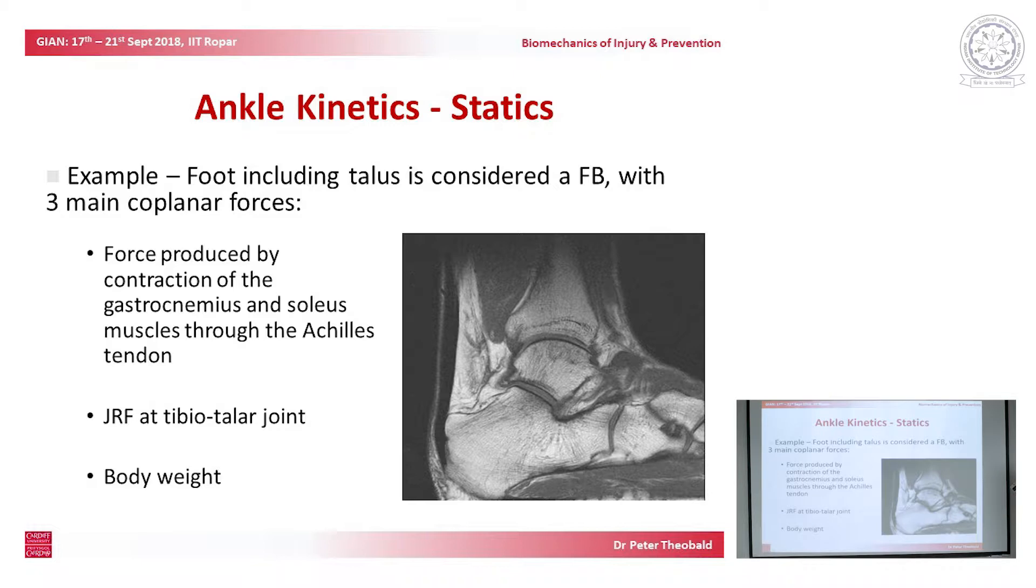We can consider the loads going through the ankle, again by using a static analysis. Our tibia is here. Here's our talus, our calcaneus. The black bit, which is almost invisible, is our Achilles tendon. This white fluorescent material is fat. This is the flexor hallucis longus, a muscle. We can do some relatively simple free body diagrams to understand the joint reaction force at the tibiotalar joint.